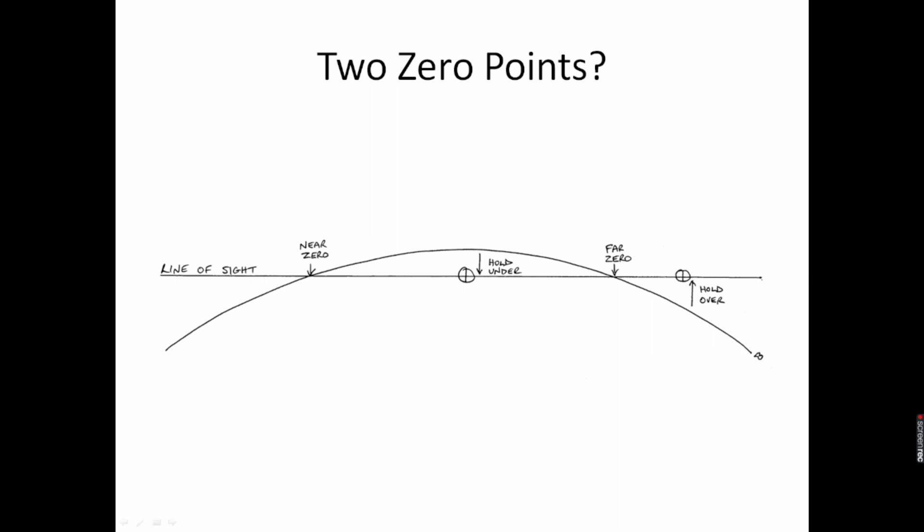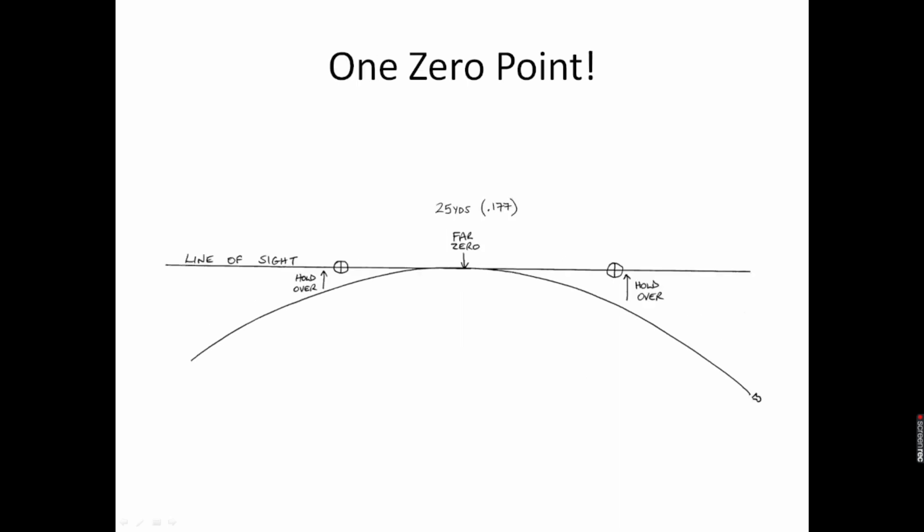In this two-zero scenario, for all the ranges along the line of sight, we either need to know our holdover or our hold under. That makes things a bit complicated because we have to remember which part of the trajectory requires a hold under and which requires a holdover. So wouldn't it be far simpler if we just had one zero point? Let's look at that.